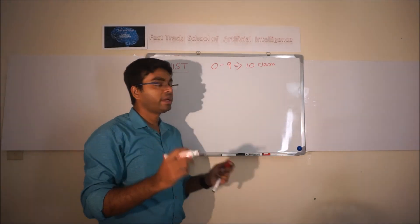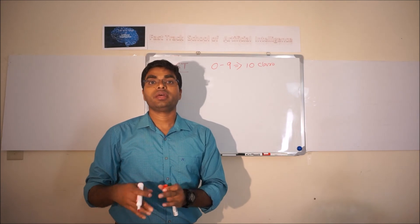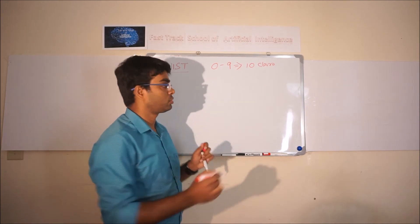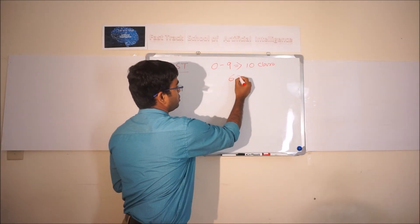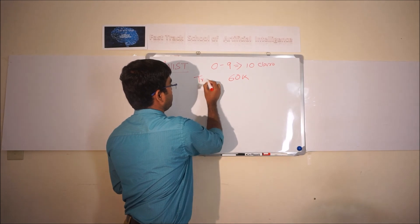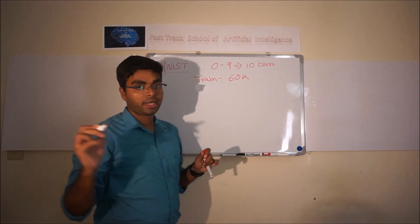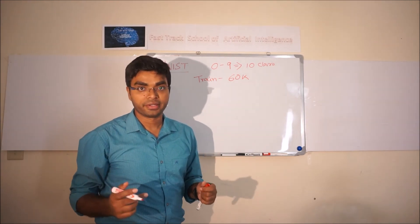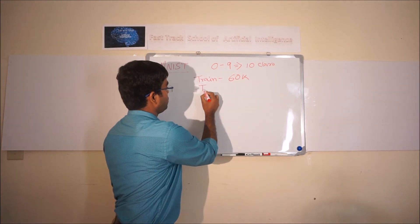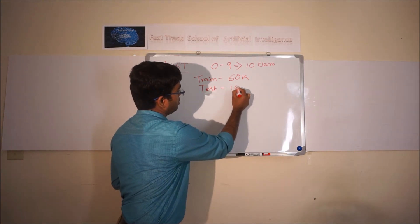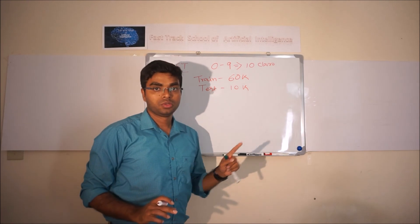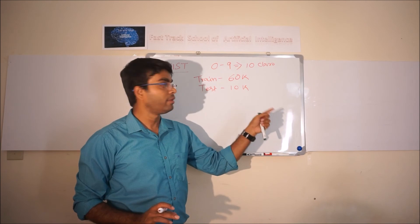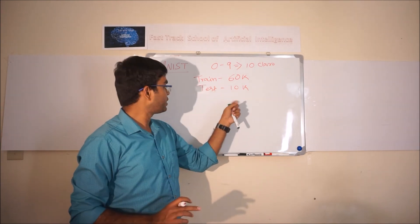It contains training data as well as the test dataset. Training data contains around 60,000 records, 60K training data. And test data contains another 10,000 handwritten digits. So we have the already pre-classified labels for the training data and as well as for the test data.